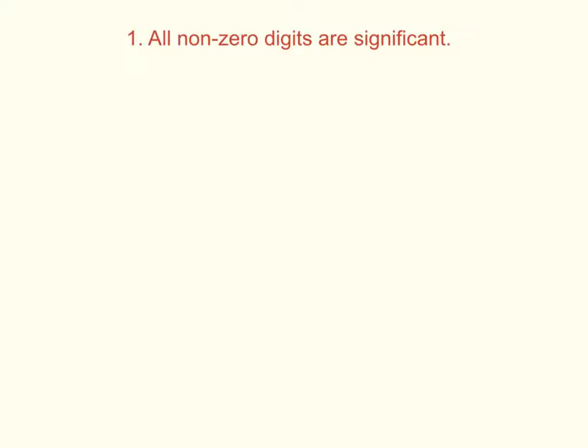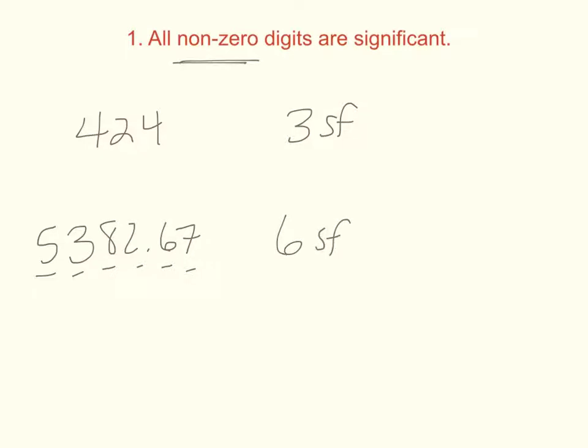For any given number, any non-zero digit is a significant figure. Examples of this are 424, that has three sig figs. I'm just going to abbreviate sig figs SF. Or 5382.67 has 1, 2, 3, 4, 5, 6 sig figs. All non-zeros are significant digits.